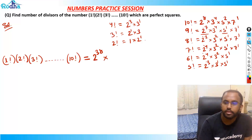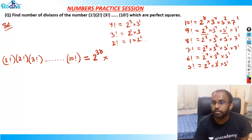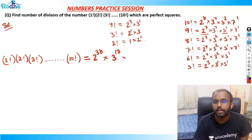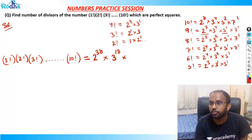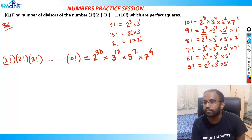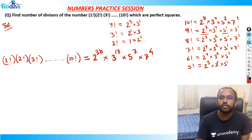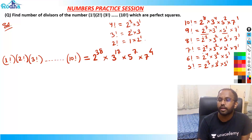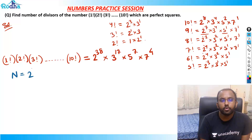Then 3 is how many times? 1, 1, 2, 3, 5, 7, 9, 13, 17 — so 3 appears 17 times. Then 5: 1, 2, 3, 4, 5, 6, 7 — so 5 appears 7 times. And 7 is 4 times: 1, 2, 3, 4. So the number N = 2^38 × 3^17 × 5^7 × 7^4.